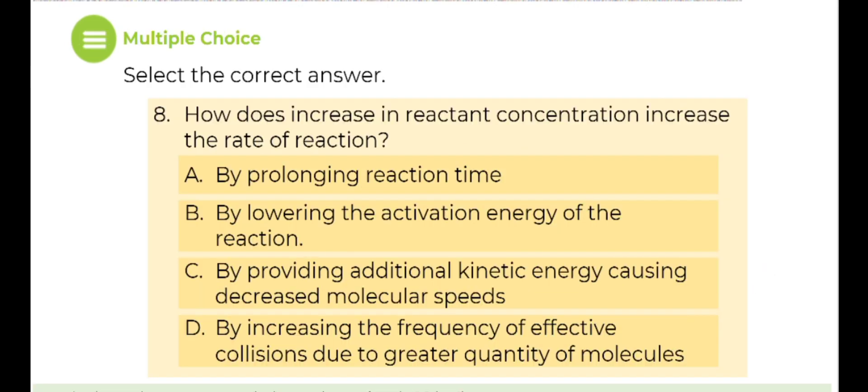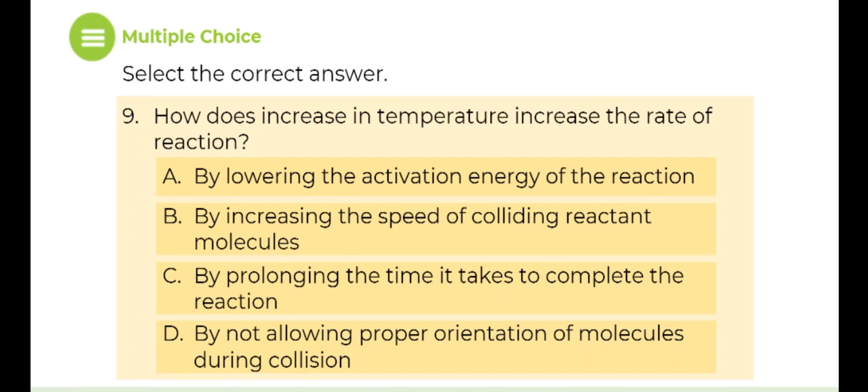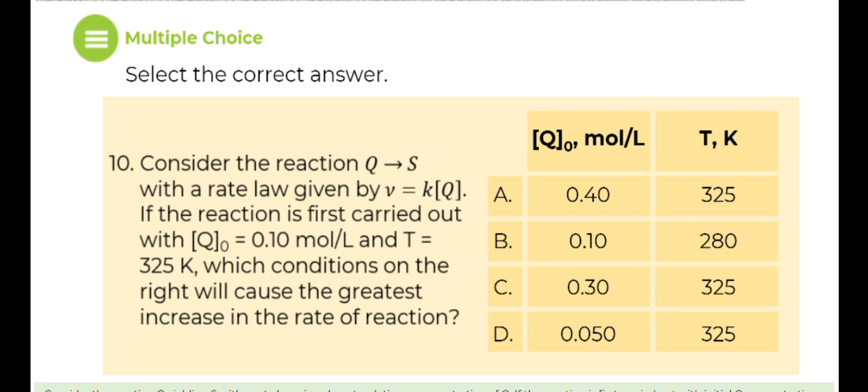Number 8: How does increase in reactant concentration increase the rate of reaction? Number 9: How does increase in temperature increase the rate of reaction? Number 10: Consider the reaction Y yielding S with a rate law given by rate equals K times concentration of Q. If the reaction is first carried out with initial Q concentration equals 0.10 moles per liter and temperature equals 325 Kelvin, which conditions on the right will cause the greatest increase in the rate of reaction?